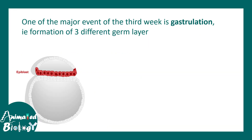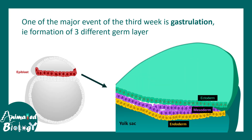One of the major events in the third week is gastrulation — that means the formation of three different germ layers. So from the epiblast, three different germ layers are formed: namely ectoderm, mesoderm, and endoderm.